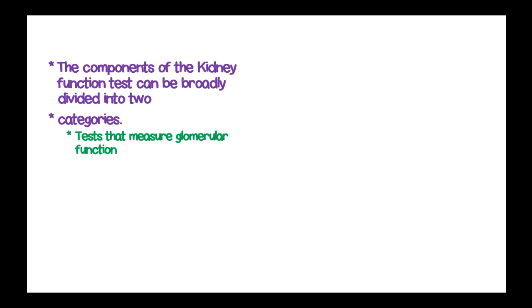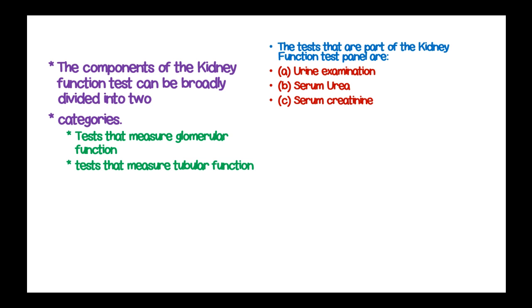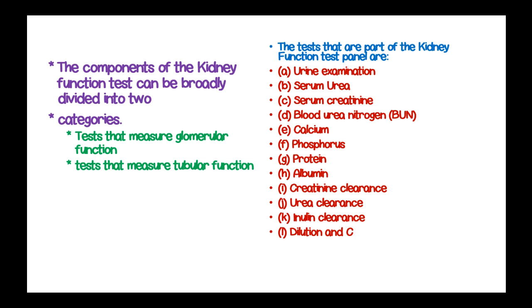The components of kidney function tests can be broadly divided into two: tests that measure glomerular function, and tests that measure tubular function. The tests that are part of the kidney function test panel include urine examination, serum urea, serum creatinine levels, blood urea nitrogen (BUN), calcium levels, phosphorus levels, proteins, albumin, creatinine clearance rate, urea clearance rates, inulin clearance rates, and dilution and concentration of urine, as well as electrolytes.